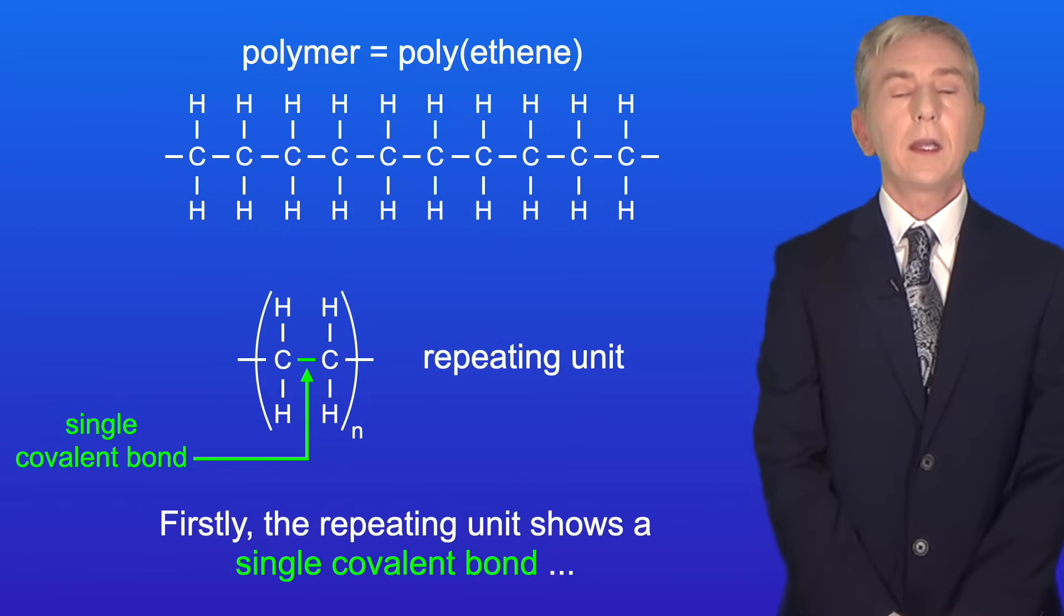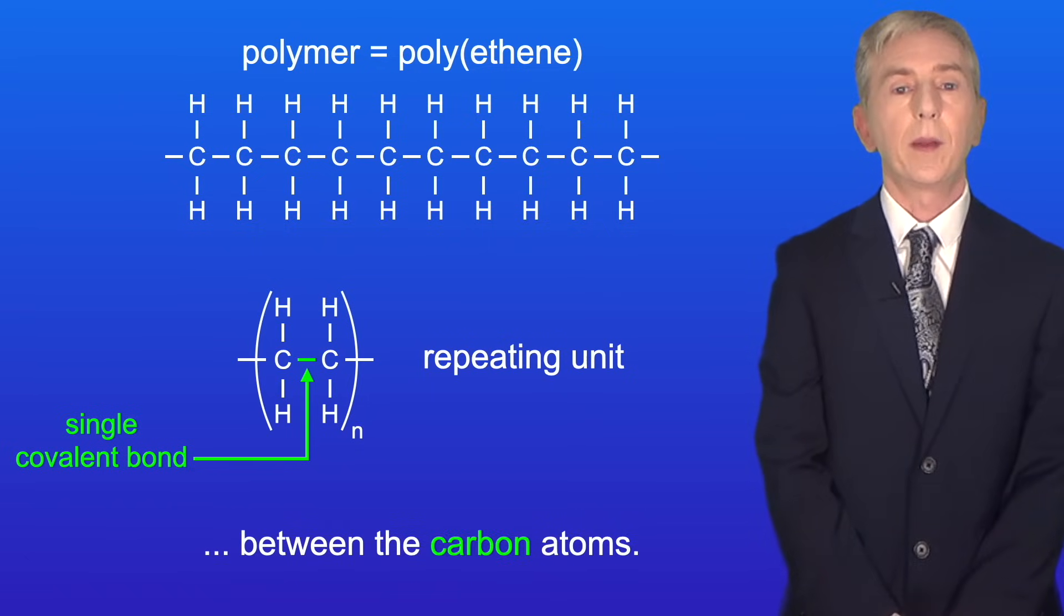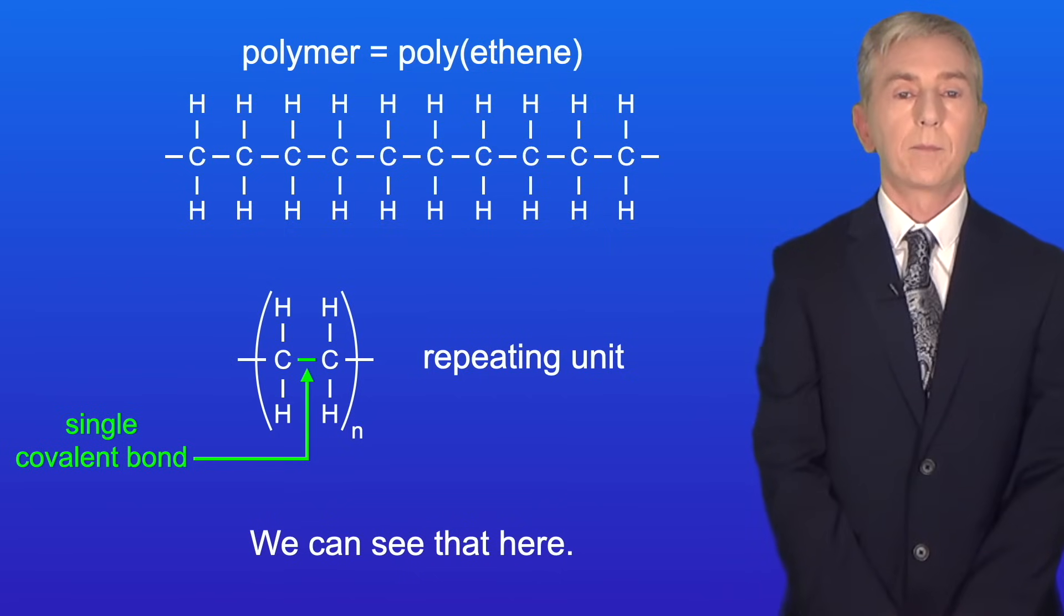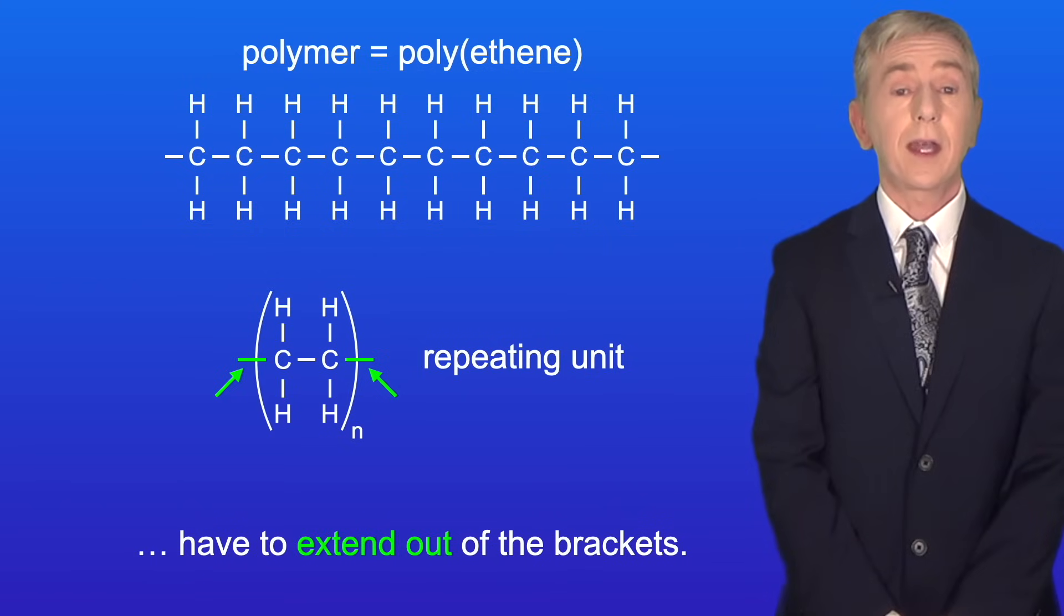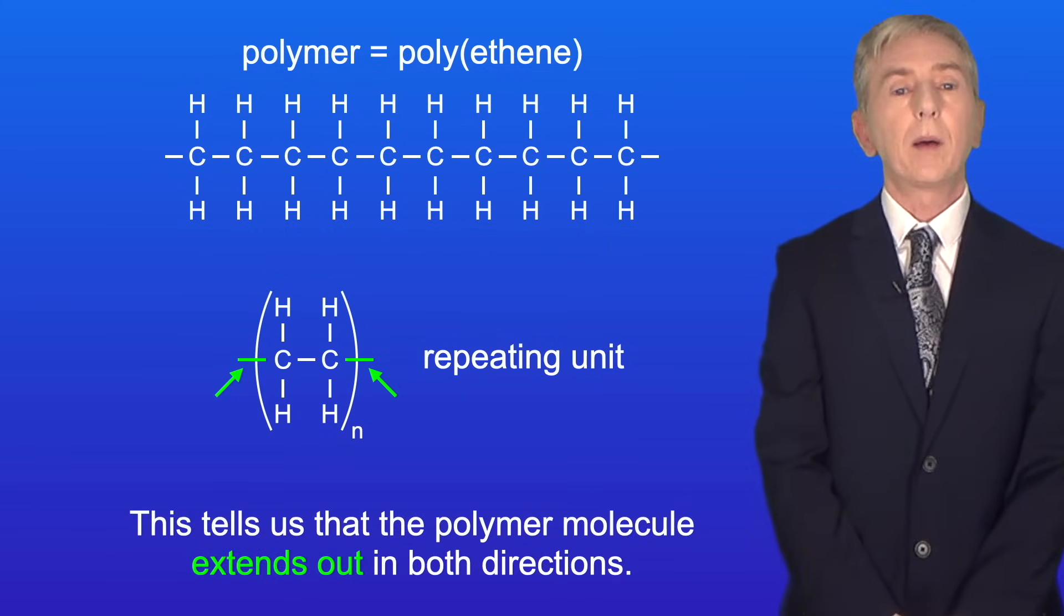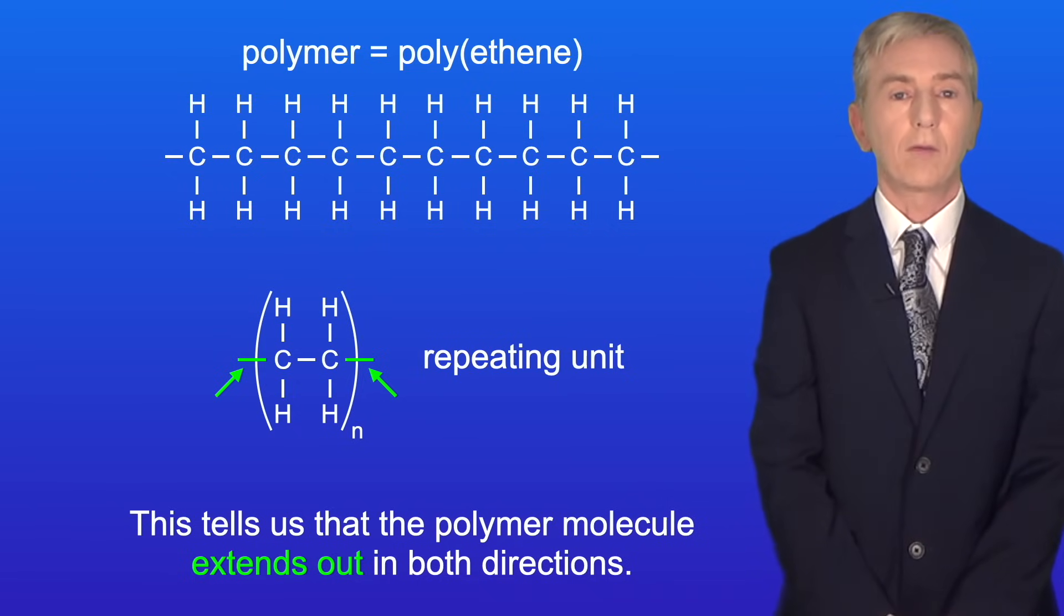Firstly the repeating unit shows a single covalent bond between the carbon atoms and we can see that here. Secondly the covalent bonds on either side have to extend out of the brackets. This tells us that the polymer molecule extends out in both directions.